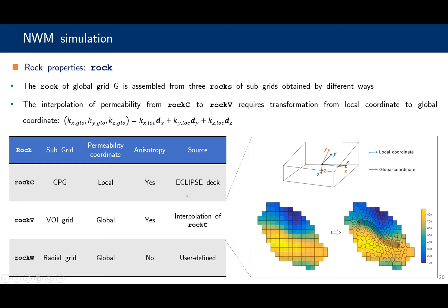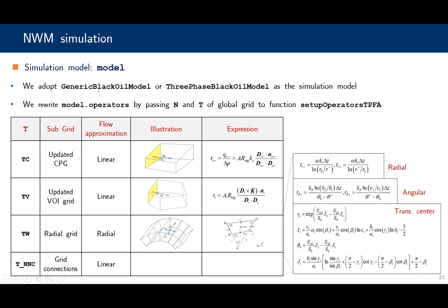For rock properties, we assemble three sub-rocks to the global rock. Rocks of the cornerpoint grid come from the input deck, the rock of the radial grid comes from the user, and the rock of the VOI grid is obtained by interpolation of rock properties. Before interpolation, we transform the permeability of the rock from local coordinate to global coordinate. For the model, we use the generic black oil model or three-phase black oil model as the simulation model, and we rewrite operators by passing neighbors and transmissibilities of the global grid to the function setupOperatorsTPFA. The global transmissibility T consists of transmissibilities of three subgrids and the connections between grids.